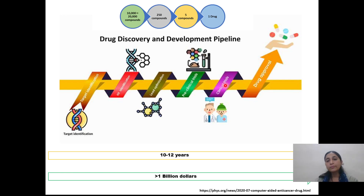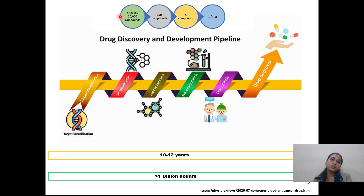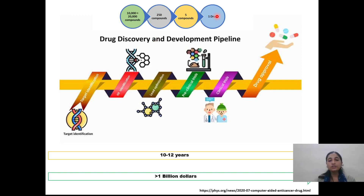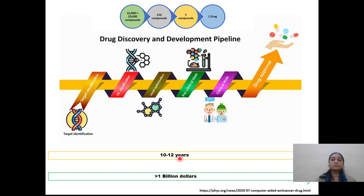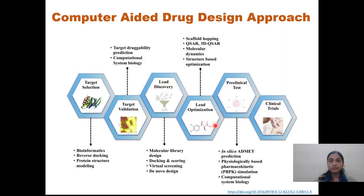After we complete that process, we will go for the approval of that drug, which we will do through the FDA or similar regulatory bodies. Basically, we start this process with millions of compounds and finally get just one drug. In the traditional method, this process usually takes 10 to 12 years and more than one billion dollars is spent for the identification of this drug.